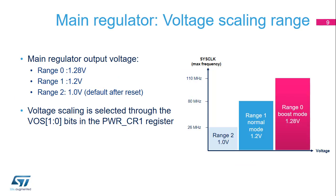Dynamic voltage scaling is a power management technique which consists in increasing or decreasing the voltage used for the digital peripherals according to the application performance and power consumption needs. The supported voltage and frequency pairs are: Range 0 — 1.28 V, up to 110 MHz; Range 1 — 1.2 V, up to 80 MHz; Range 2 — 1.0 V, up to 26 MHz.